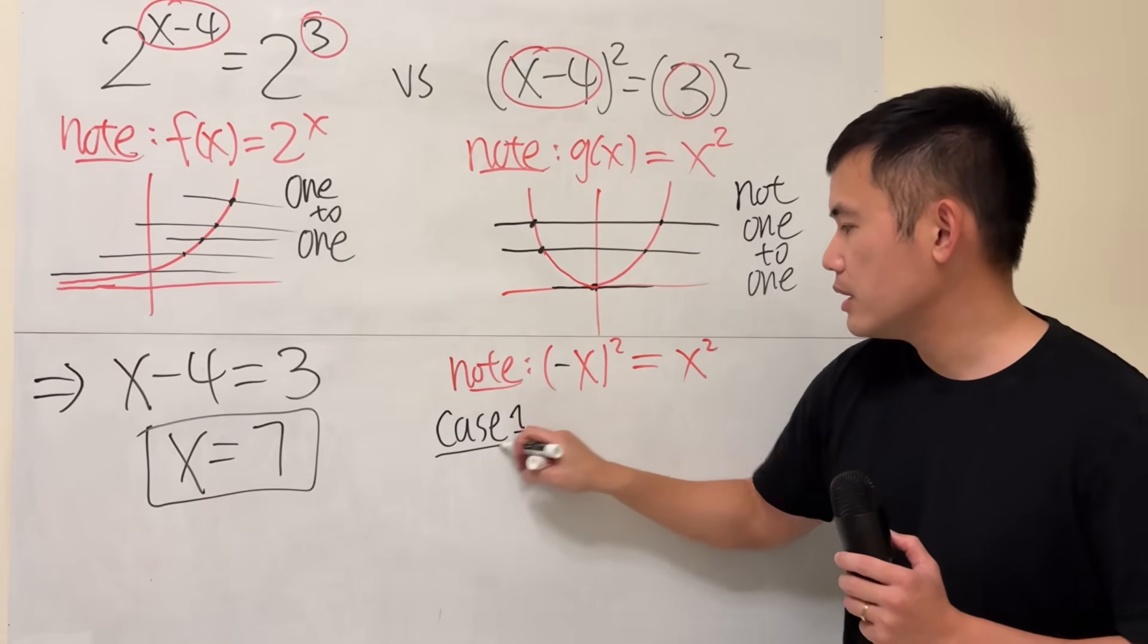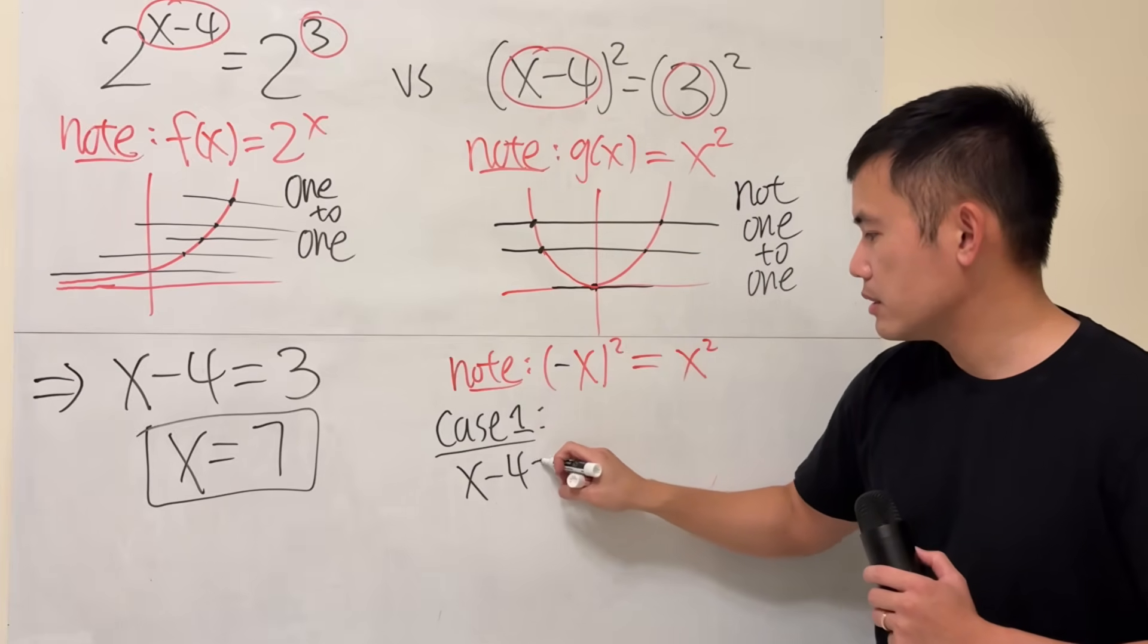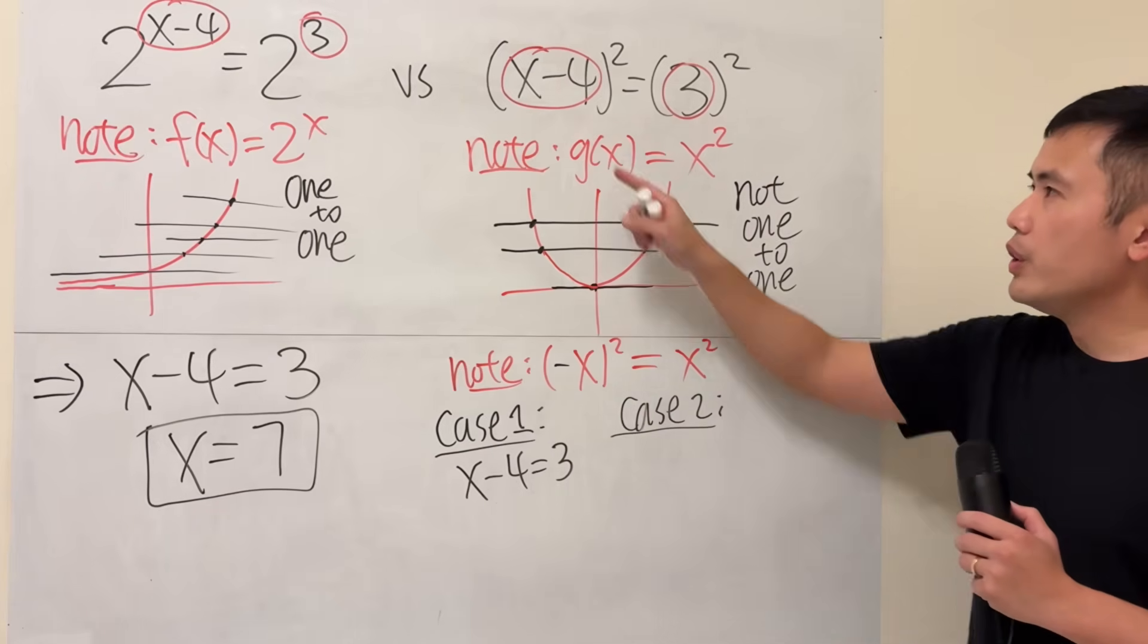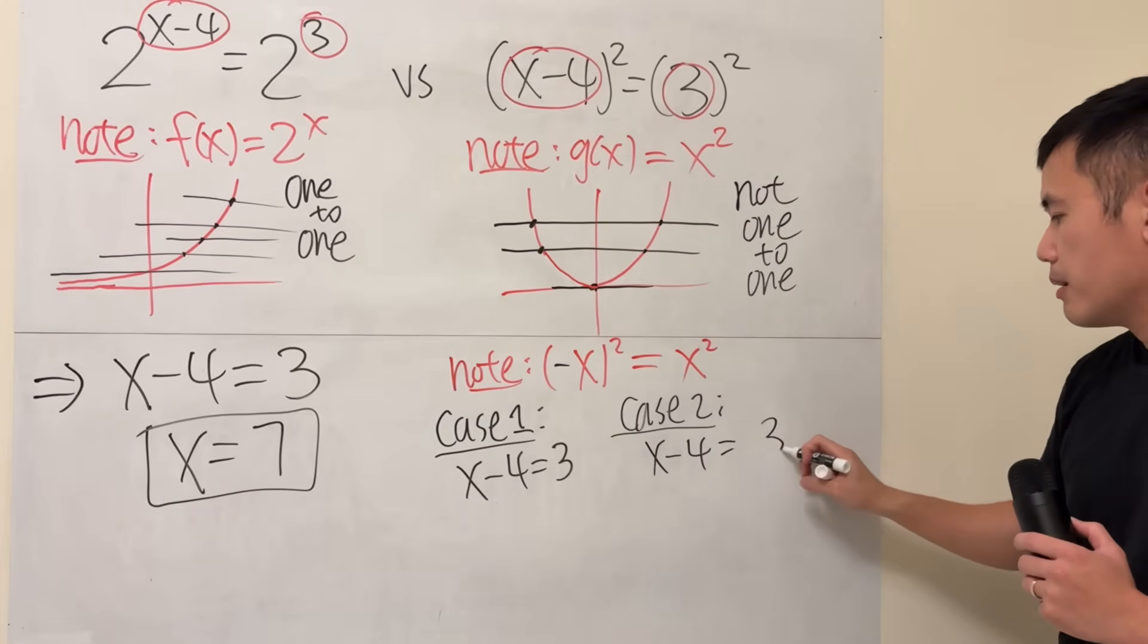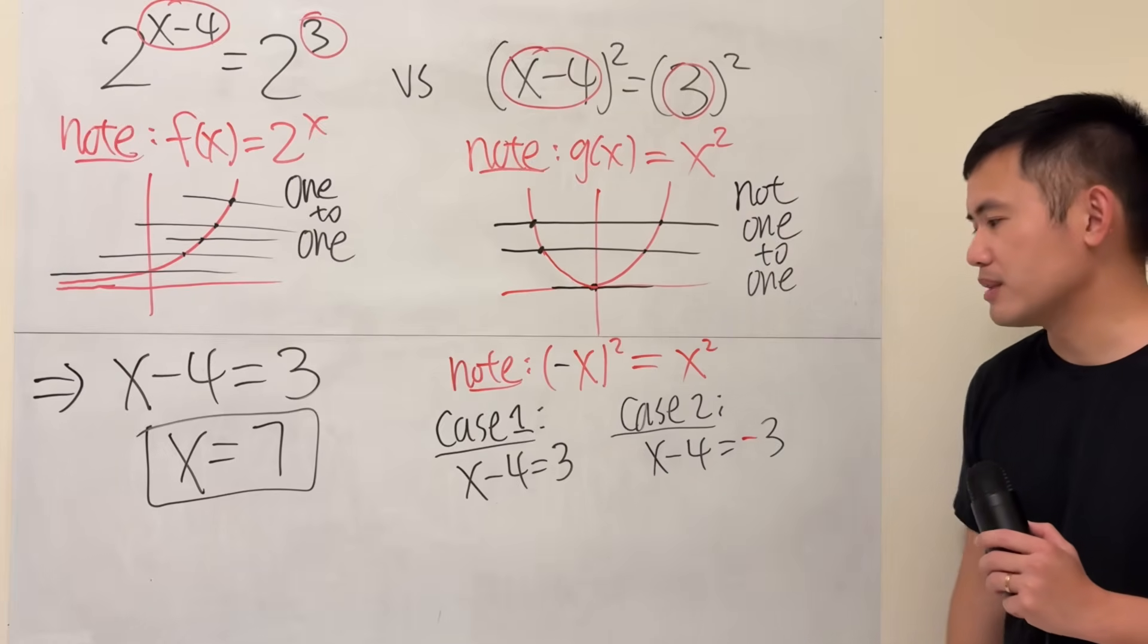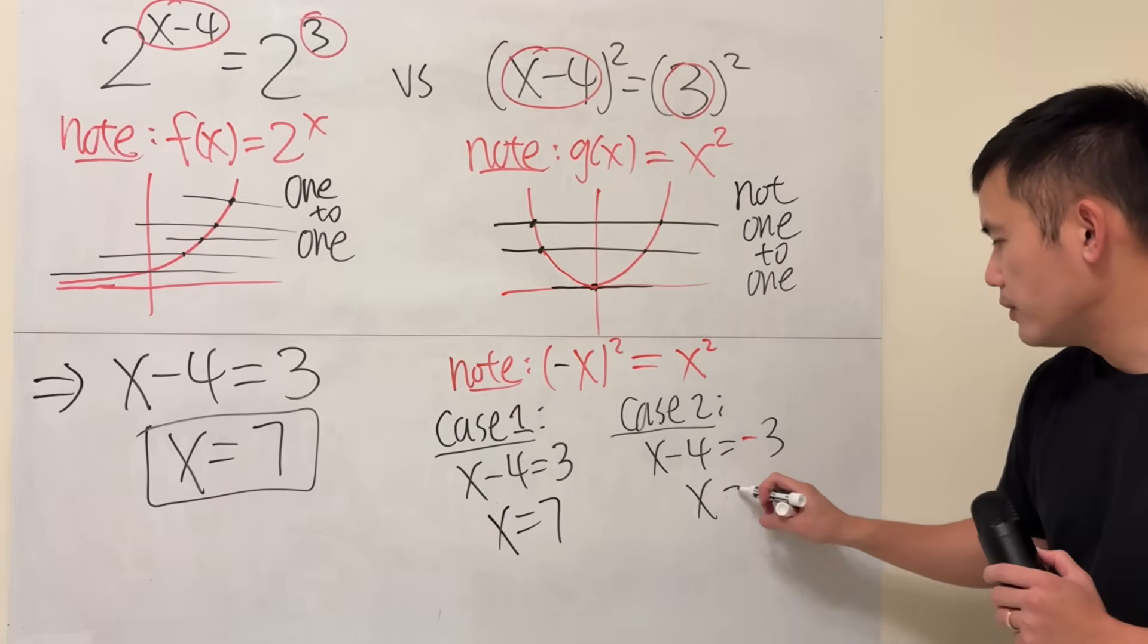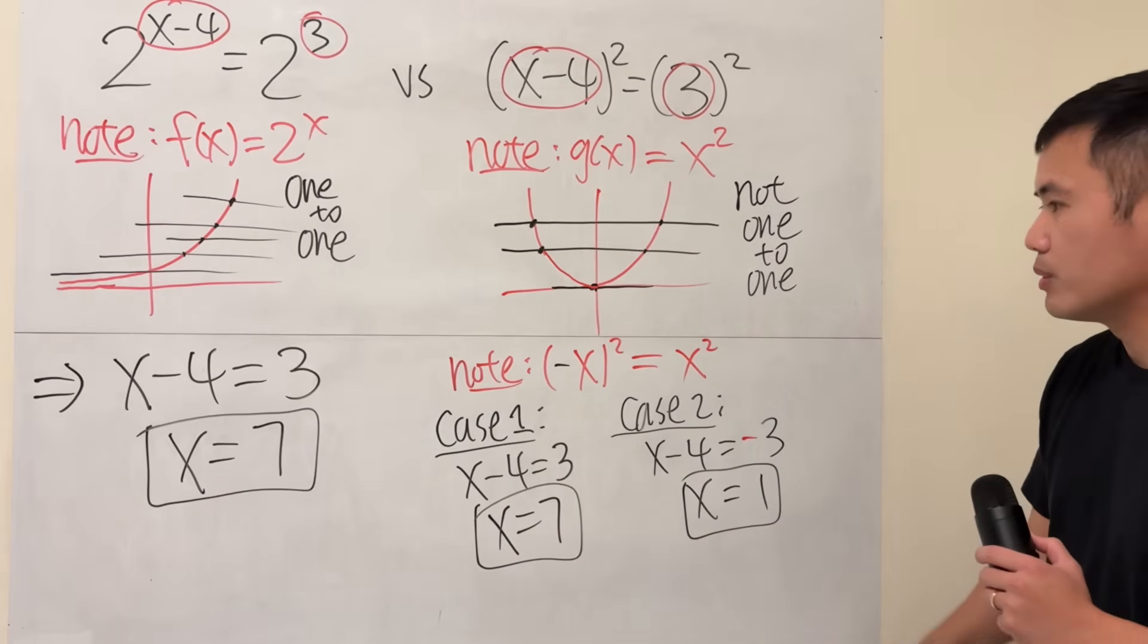Case one, you just look at the insides and then make them equal to each other. And then, the second one, because of this right here, you are going to put this right here and then put this right here, but negate that. Or you could have negated this one right here, too. It doesn't really matter. So, you have two cases and then work them out. This right here will give you seven and this right here will give you one by adding four to both sides and all that.